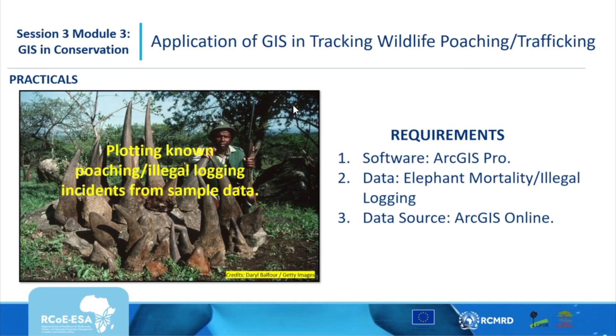Towards the end of this unit we are going to do a hands-on practical where we will be mapping poaching hotspots and also mapping illegal logging sites. We will require ArcGIS Pro and will be providing elephant mortality data along with illegal logging sites, pulling these datasets from ArcGIS Online. Thank you very much for watching — see you in the practical activity.